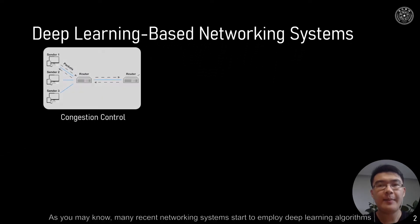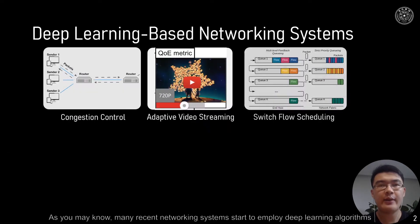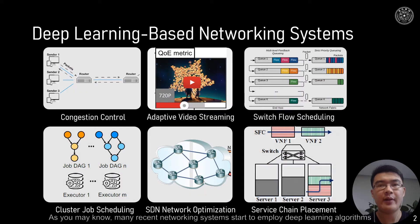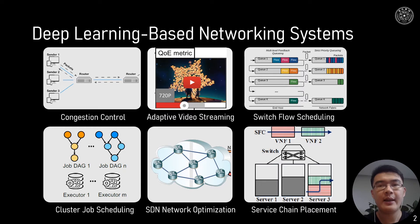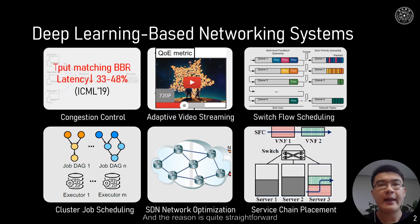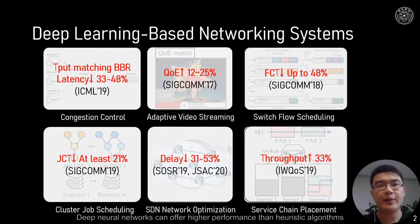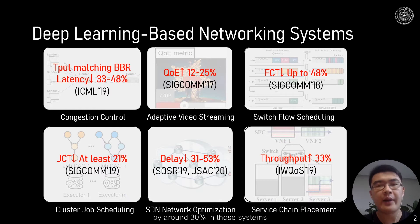As you may know, many recent networking systems start to employ deep learning algorithms, and some are even being deployed in industrial applications. The reason is quite straightforward: deep neural networks can offer higher performance than heuristic algorithms by around 30% in those systems.